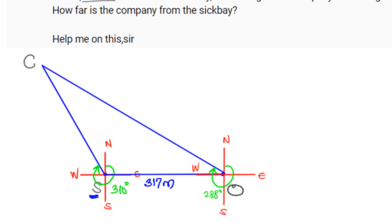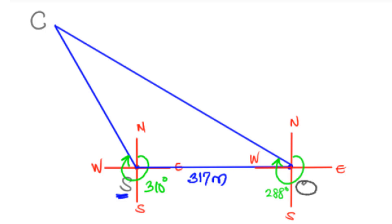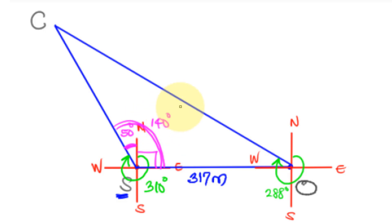Once we have the diagram, we can use the sine or cosine rule. Looking at the Seat Bay, angles at a point sum to 360 degrees. We take 310 degrees, so the remaining angle between the bearing line and the north is 50 degrees. Between north and east is a right angle, so the total angle from the bearing of the company from the Seat Bay to the east is 140 degrees — that is 50 plus 90. At the office of the commandant, we have 288 degrees taken out, and from north to west that is 270, so the remaining angle is 288 minus 270, which gives us 18 degrees.